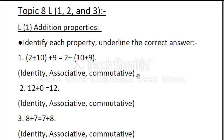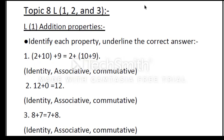The first property is called the Commutative property. In this property, you can add numbers in any order and the sum will be the same. For example, 2 plus 4 equals 6, or 4 plus 2 equals 6 — the same sum. That is the commutative property.